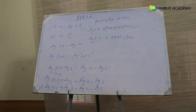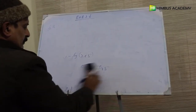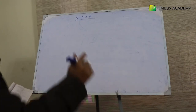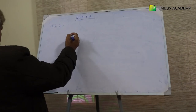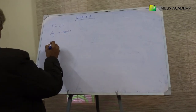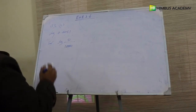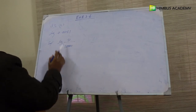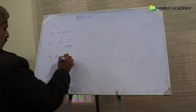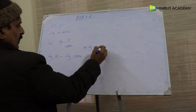اب question 2 کا fifth part: log of 0.0081. یہ ہوگا log of 81 divided by 10000، کیونکہ point کے right side پر 4 numbers ہیں تو 4 zeros — یعنی 81/10000۔ Log m/n = log m minus log n. اور log of 10 = 1، log of 100 = 2، log of 1000 = 3، log of 10000 = 4۔